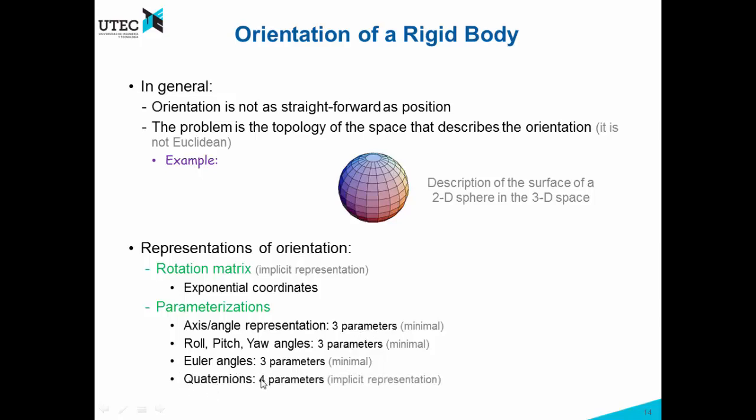And we also have quaternions. Quaternions have four parameters, so this is not minimal. It is an implicit representation because it has four parameters, but we have one extra constraint.